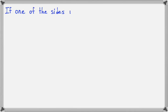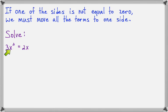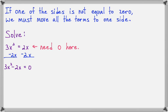It doesn't always happen that you get an equation set equal to 0. If one side is not equal to 0, we'll have to move all terms to one side of the equal sign. In this example we have 3x squared equals 2x. Since we don't have a 0 on one side, we subtract 2x from both sides. On the right side, 2x minus 2x is 0. On the left side, 3x squared minus 2x has to be written as 3x squared minus 2x equals 0. We can't combine these because they're not like terms.